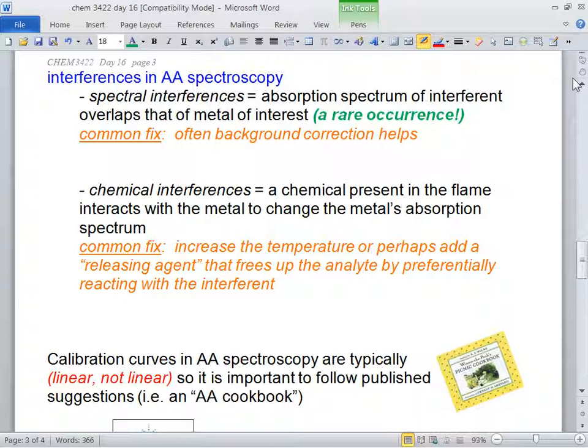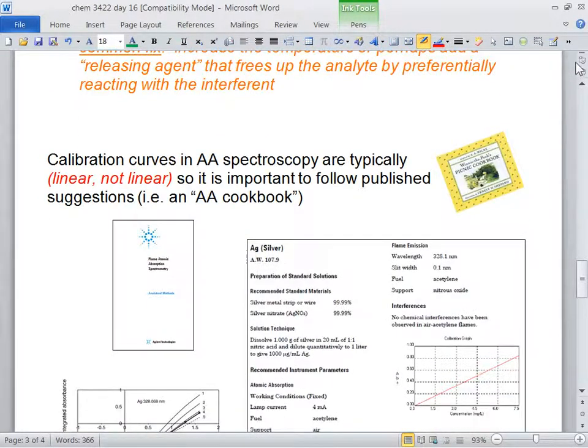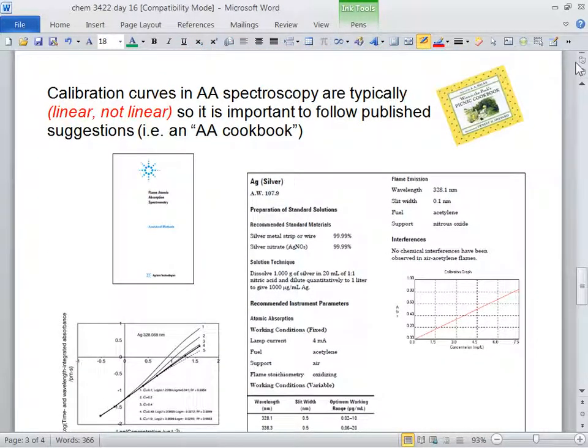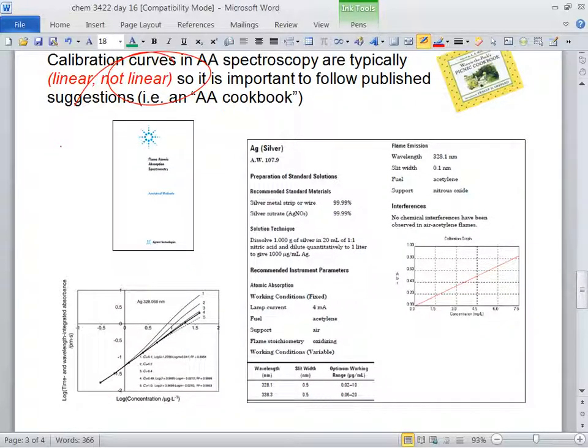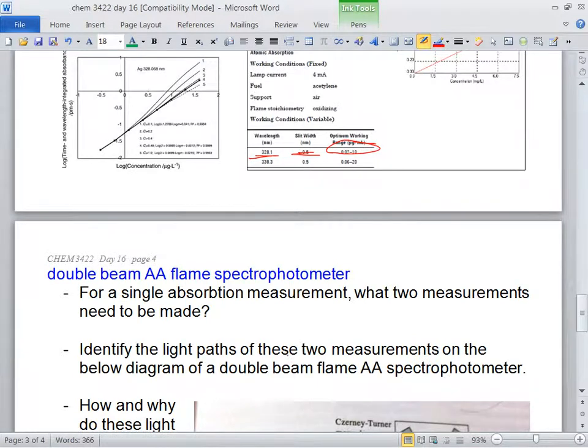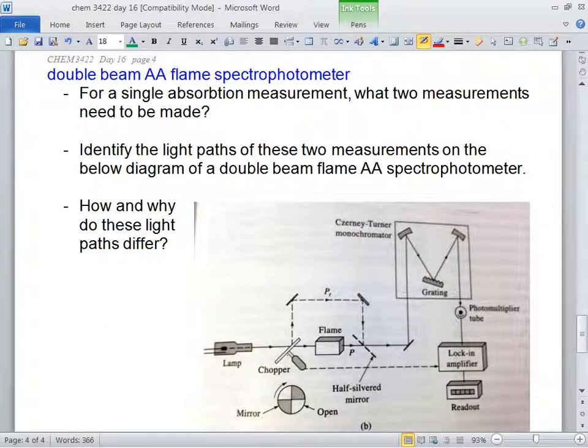Calibration curves. The calibration curves are not linear. That's why you've got to use an AA cookbook. They're not linear. That's why it's so important to use that AA cookbook. Follow all the directions. The slit width, all that kind of stuff. For particular concentration ranges, there's a slit width and there's the line that you should use to get the most linear results.